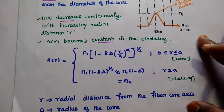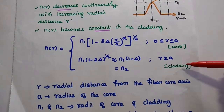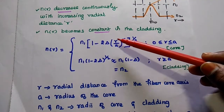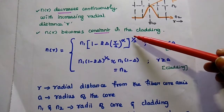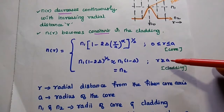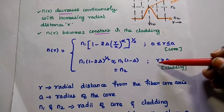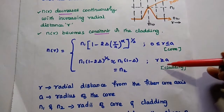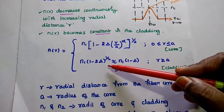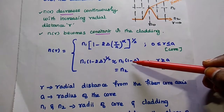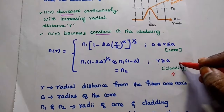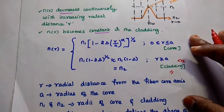We can define the N(r) values for different regions. Within the core, its value is N1 multiplied by the square root of 1 minus 2·delta·(r/A)^alpha. If the radial distance is greater than or equal to the core radius A, that is in the cladding, its value is N1 into (1 minus 2·delta)^(1/2), which can be approximated as N1·(1 minus delta), and that is equal to N2. So in the cladding, its value is simply constant — the refractive index of the cladding itself.